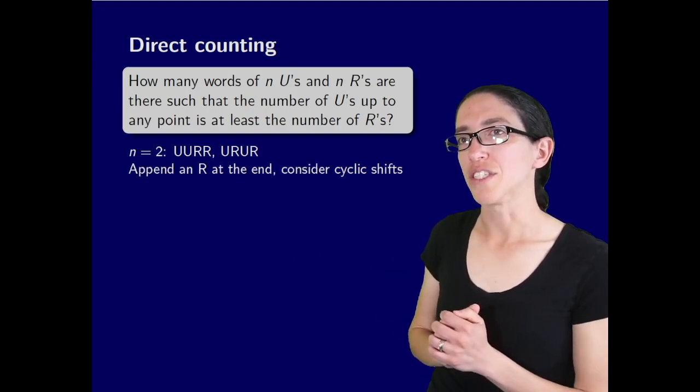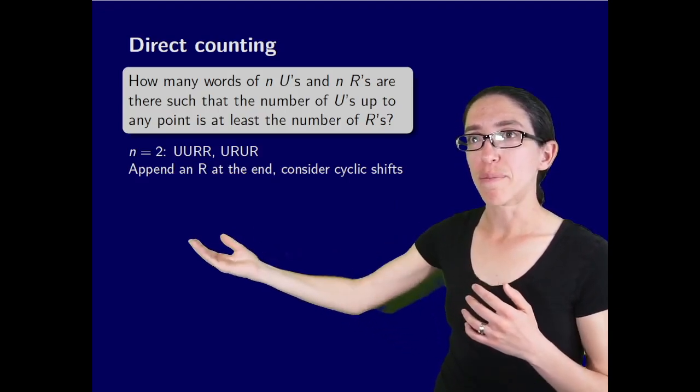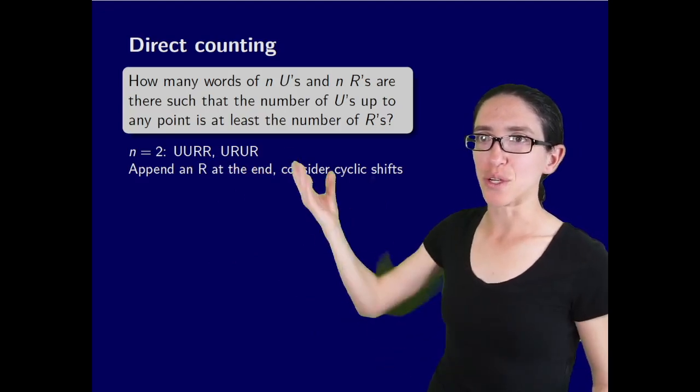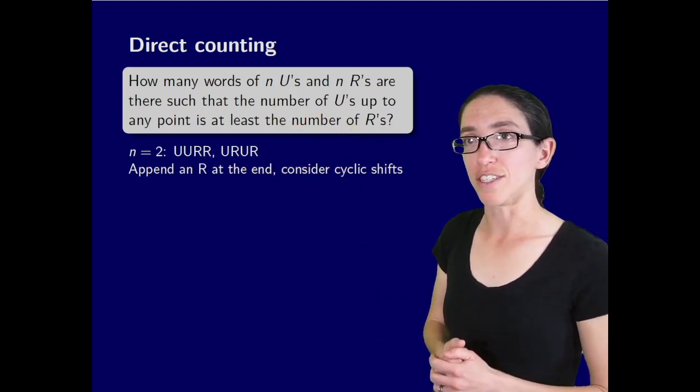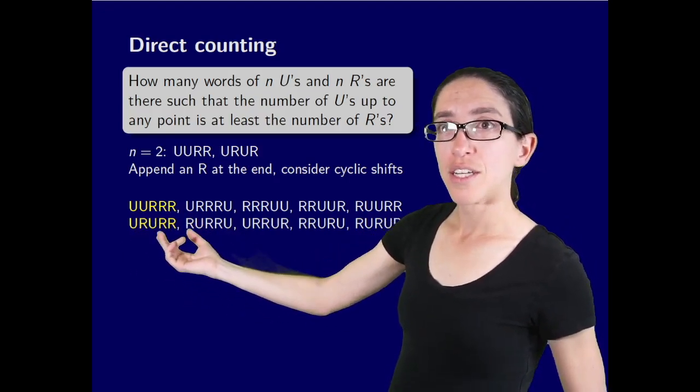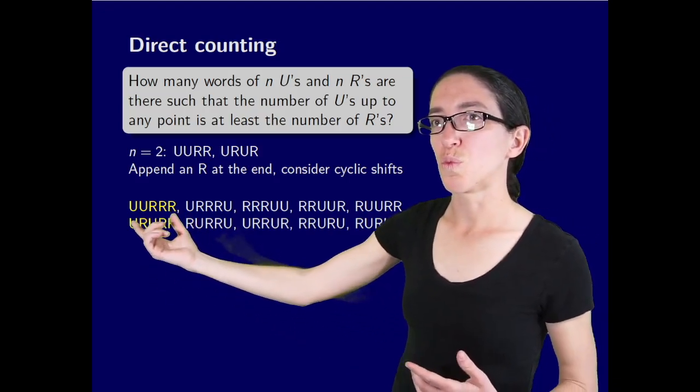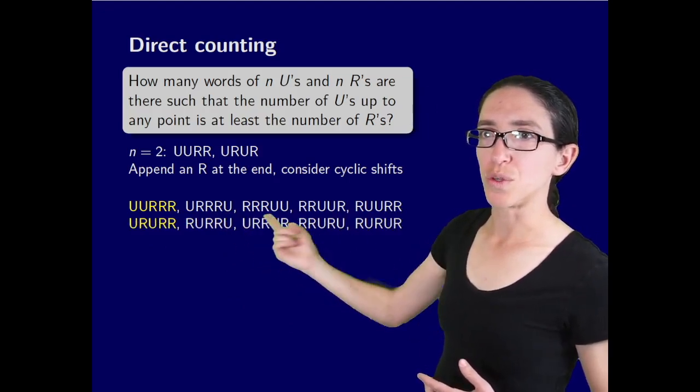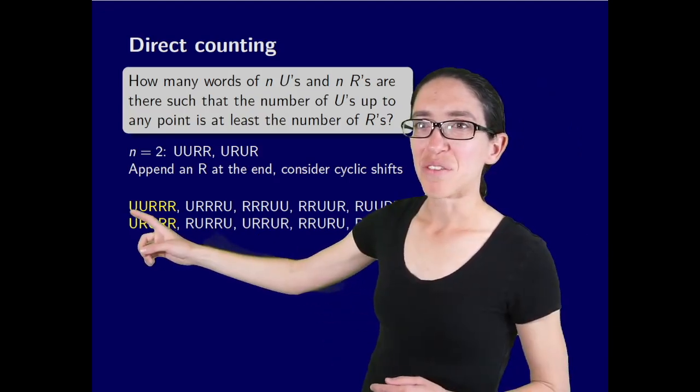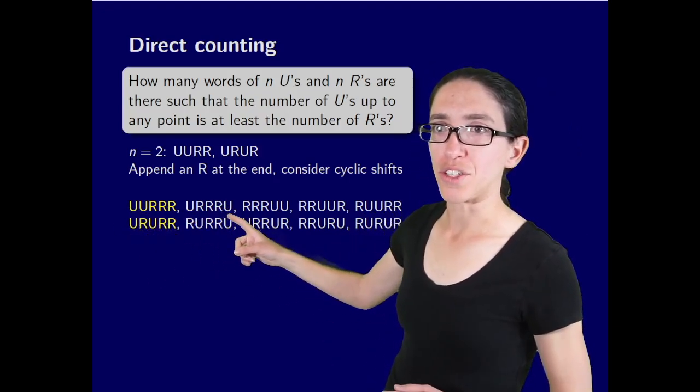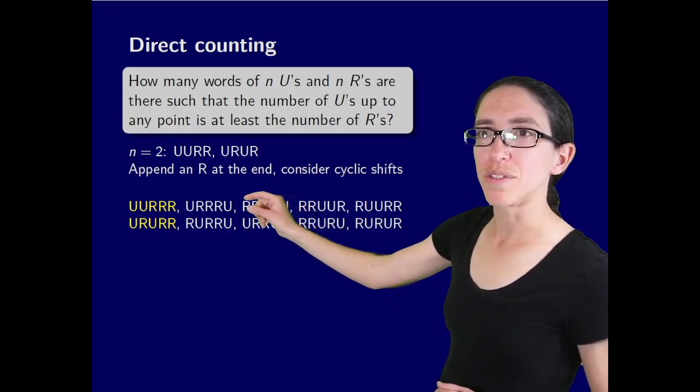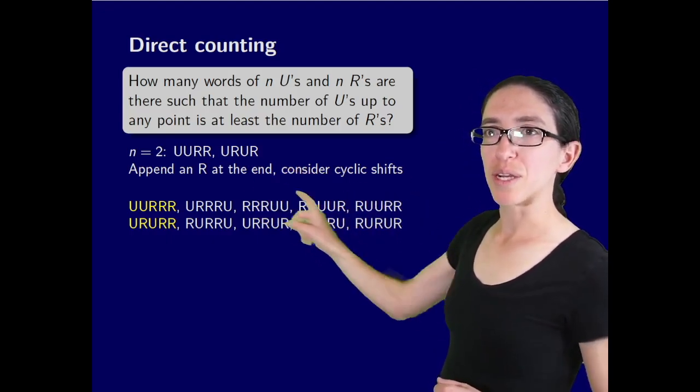Now let's over count in general. We're going to over count by appending an R at the end of each of these words and considering all the cyclic shifts. That's going to make it symmetric again so we don't have this pesky condition about the U's outweighing the R's. Here's these two words with an R appended at the end: UURRR and URURR. So now there's three R's and two U's. What that means is that since there's one more R than U, every cyclic shift of this word is different. You keep taking the first letter and putting it on the end and eventually you wrap around to the beginning again.